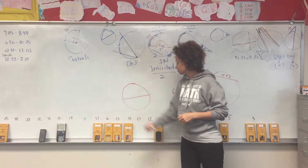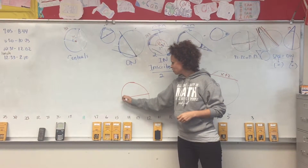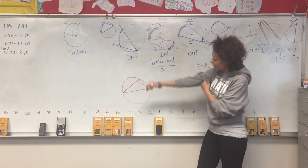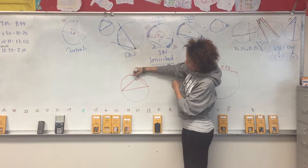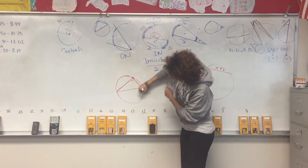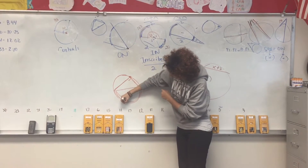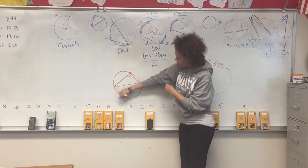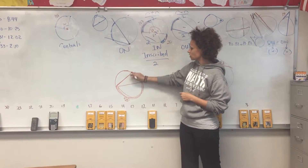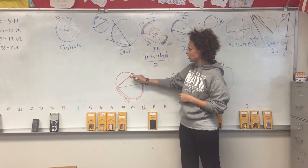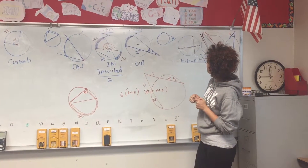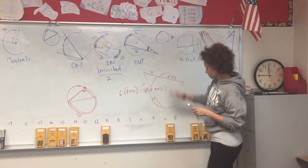Another rule: if you have a circle and the diameter forms an inscribed angle, that angle is always going to be 90 degrees. This is because the vertex is on the circle, and the arc of the diameter is 180 degrees — half the circle — so dividing by two gives you 90.